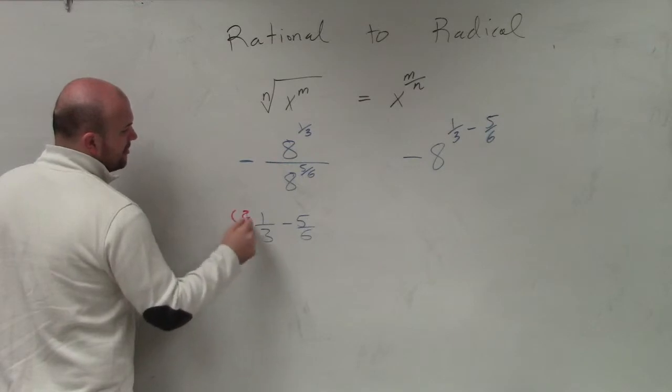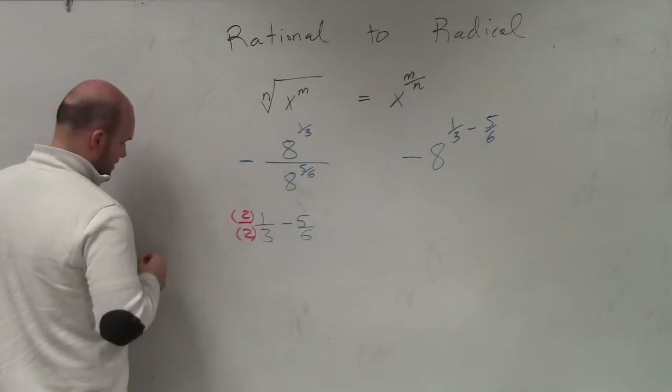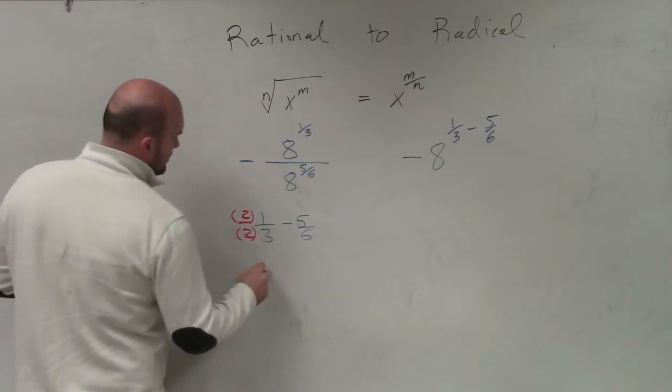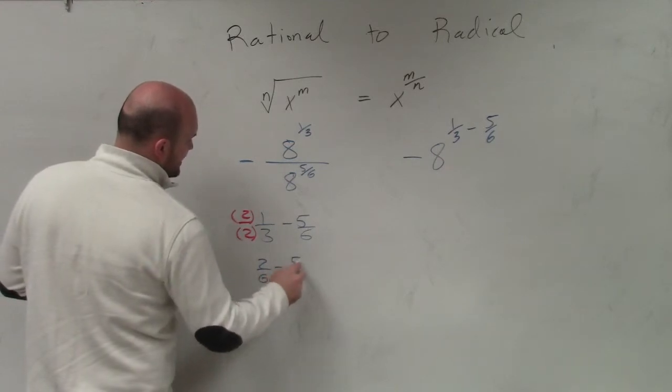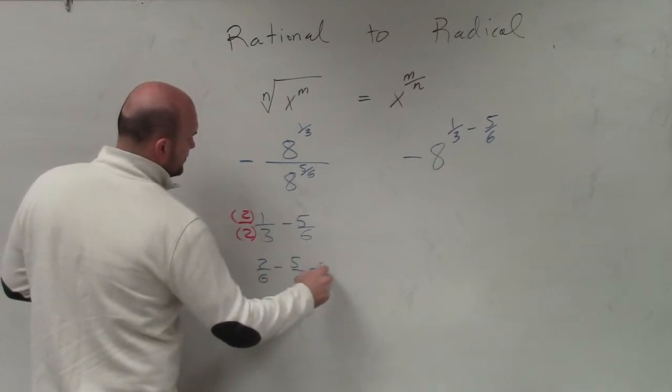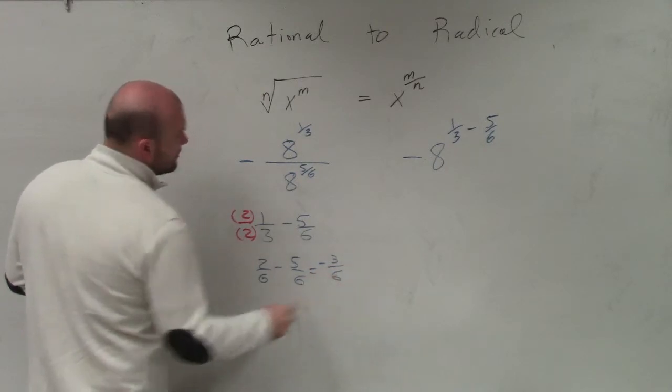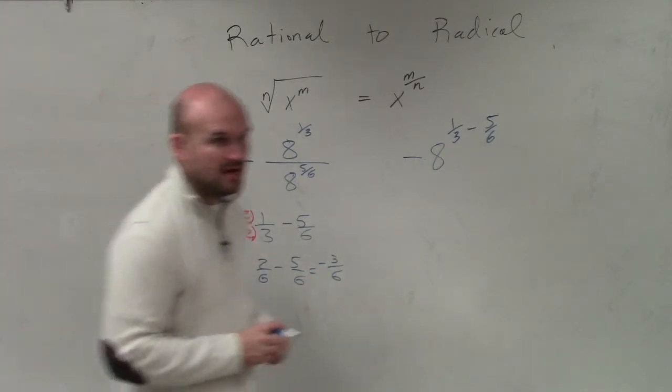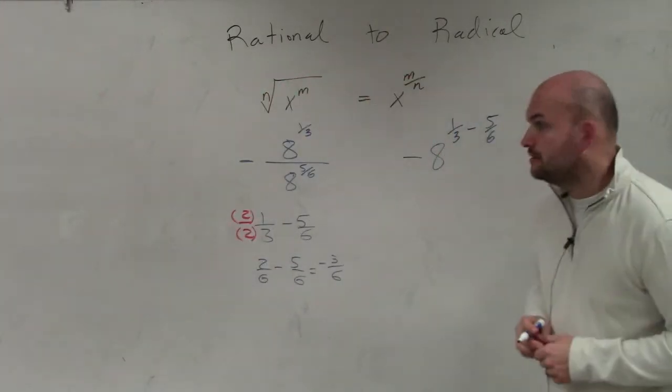So I'll multiply by 2 over 2. Therefore, I obtain 2/6 minus 5/6, which equals negative 3/6. Right? Yes?